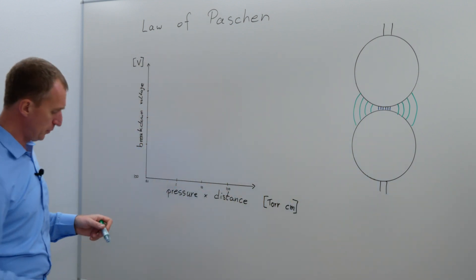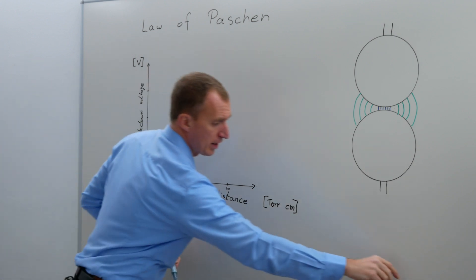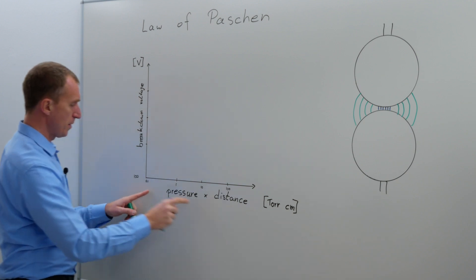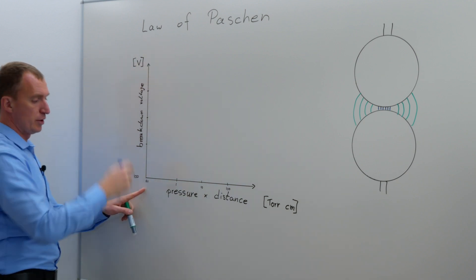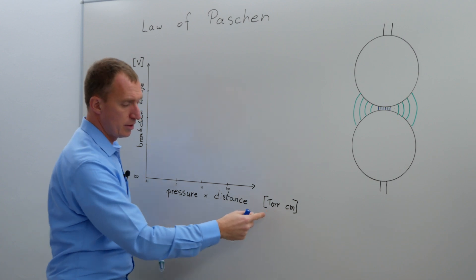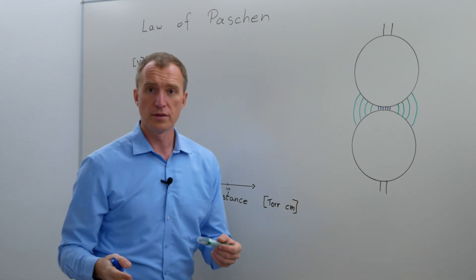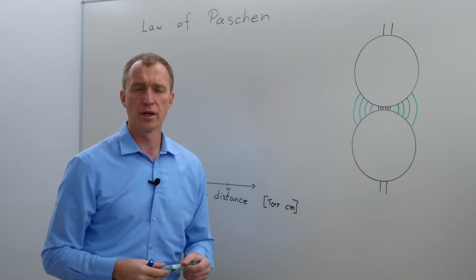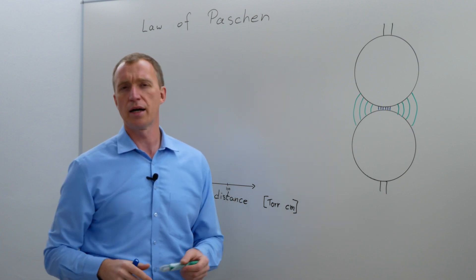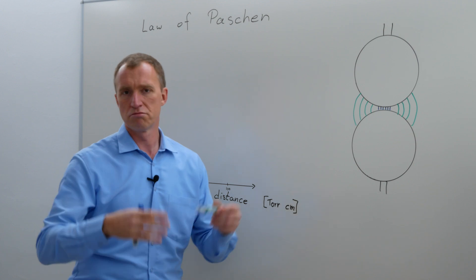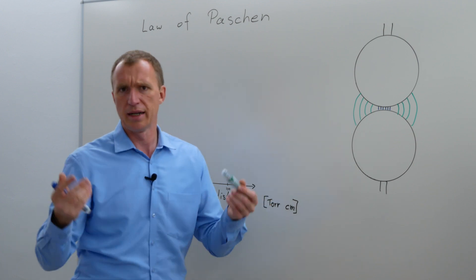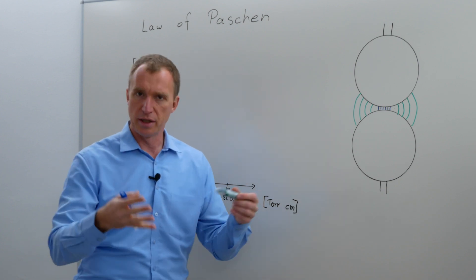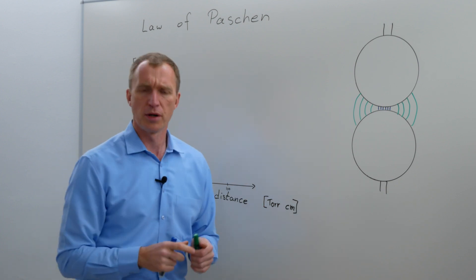Here we have a diagram. This diagram is double logarithmic, meaning here we have pressure times distance, and here we have the breakdown voltage. The units are torr and centimeters. Torr is a historic unit of pressure, and one torr is something around 133 pascal, so we could also write pascal times centimeters, then obviously the axis would change a little bit.